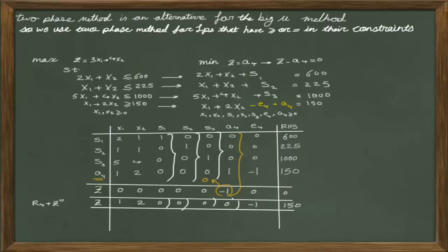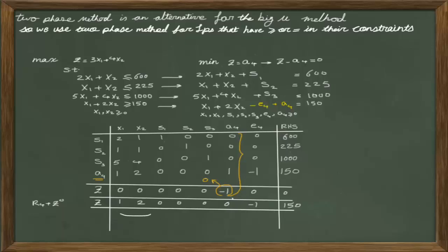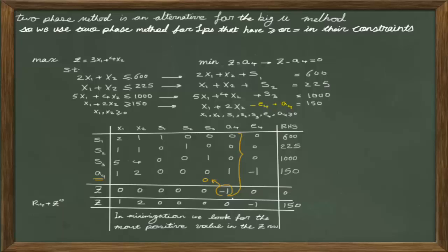Now in this new table, the conditions for all basic variables are met and we can continue. No matter whether your original objective function is a maximization or minimization, phase 1 always starts with a minimization problem. For a minimization problem, the optimality condition is when all coefficients in the row of z are negative or zero. Since there are two positive values, we continue. We look for the most positive value — in this example, x2 is the most positive, so it is our pivot column.